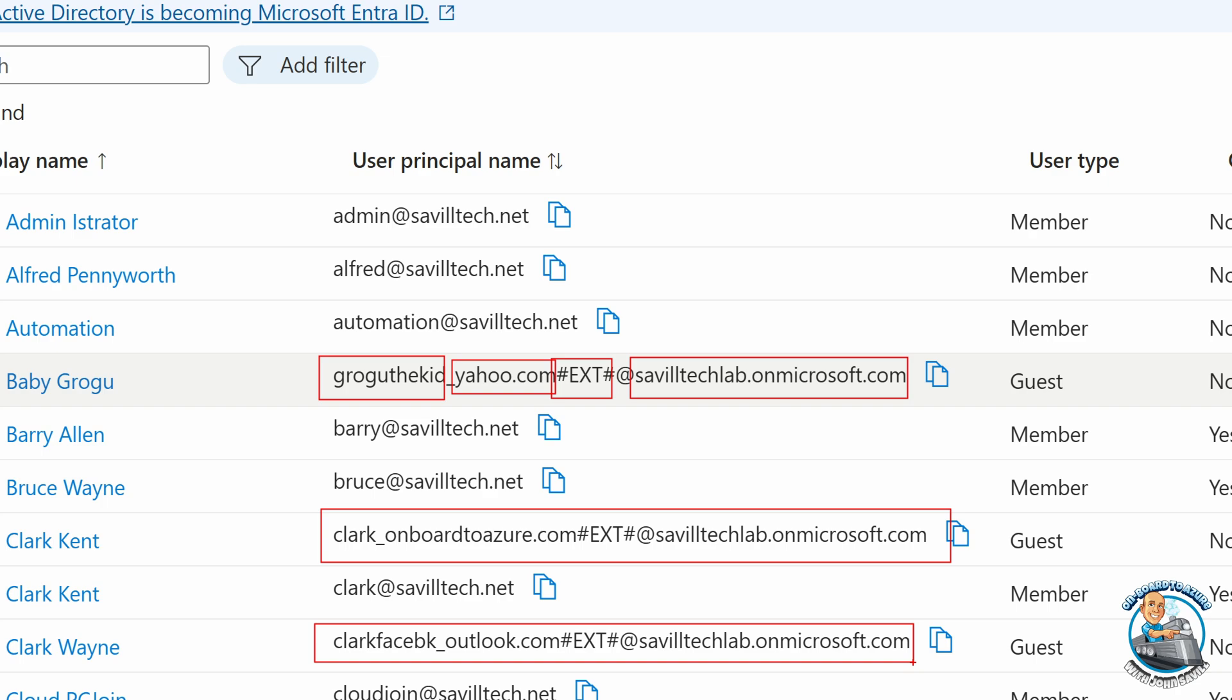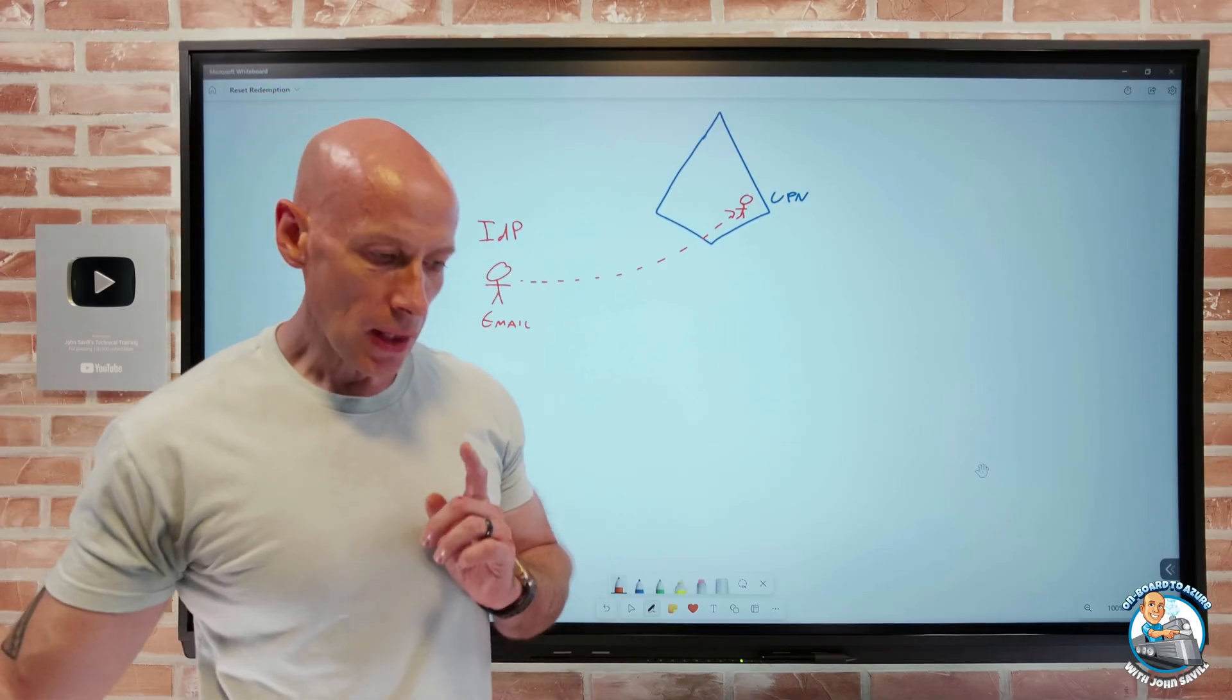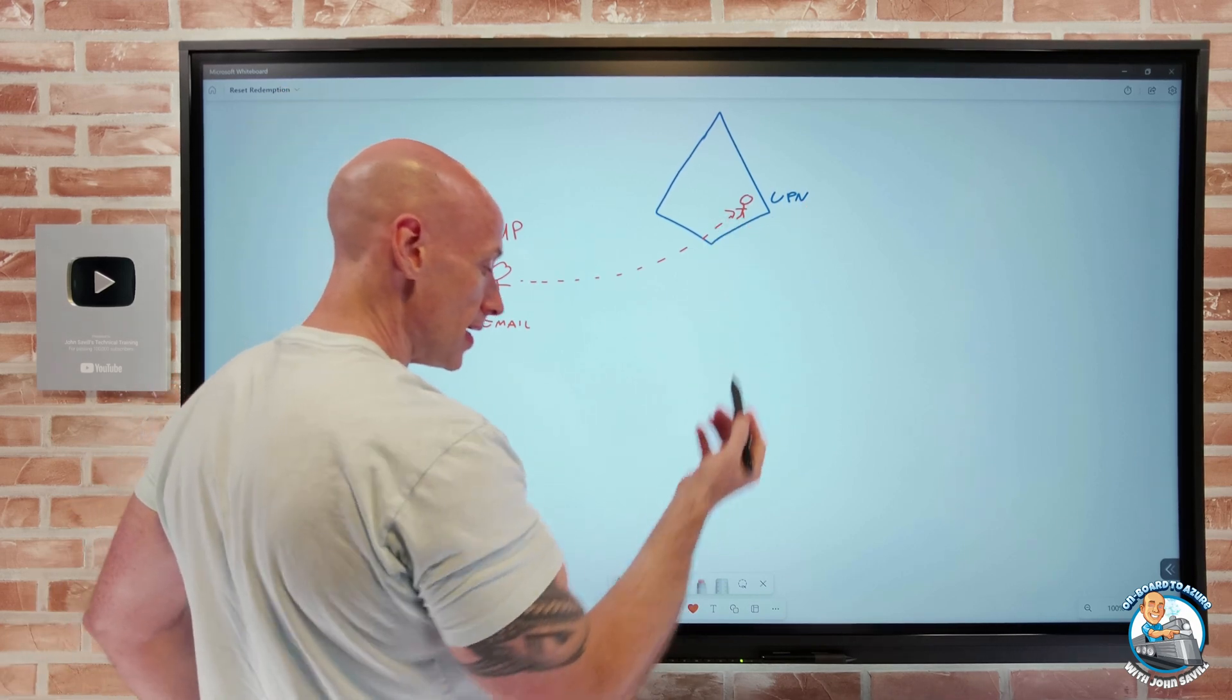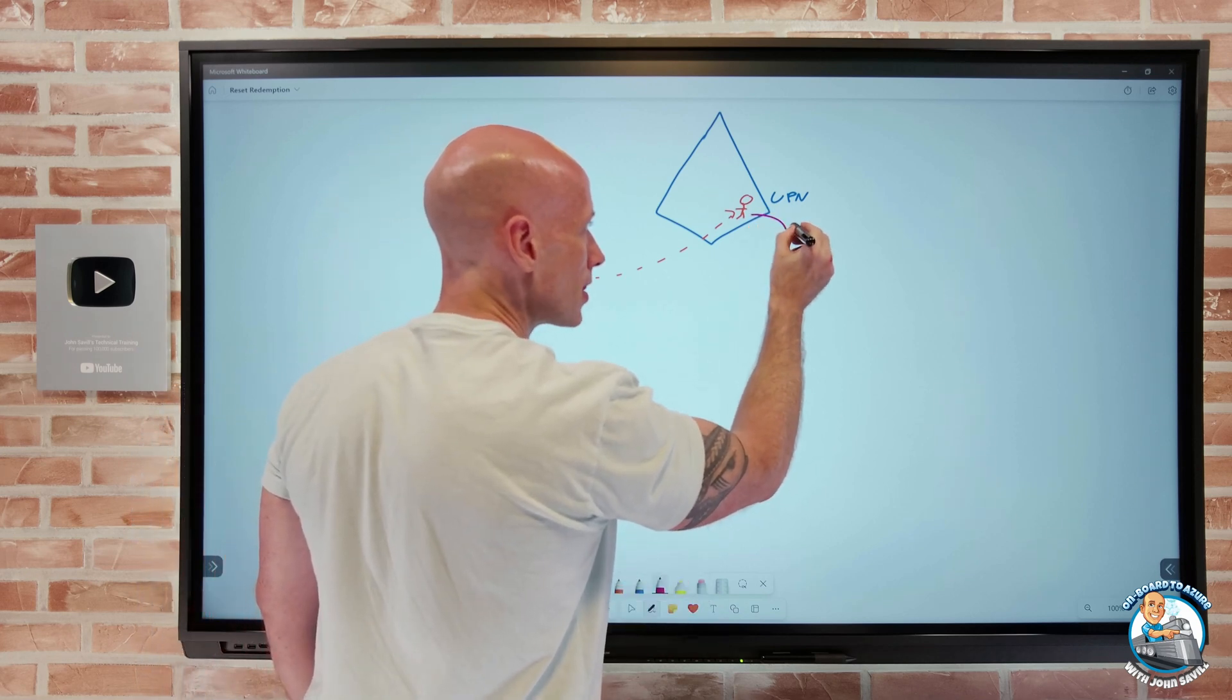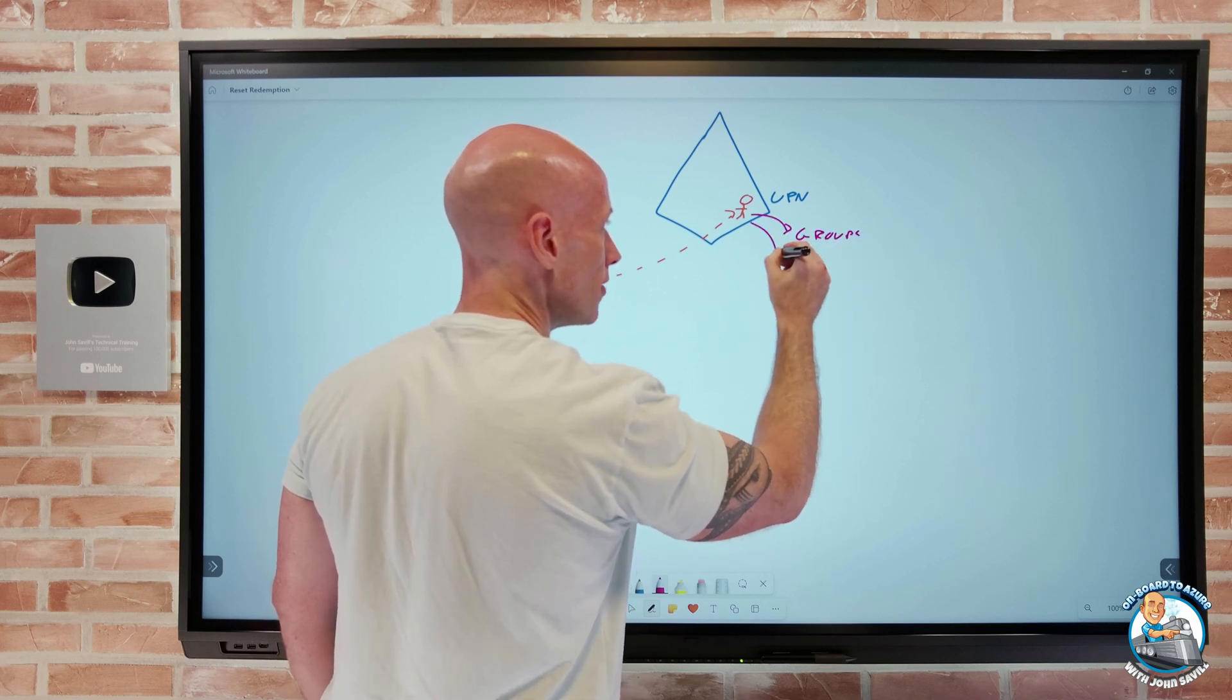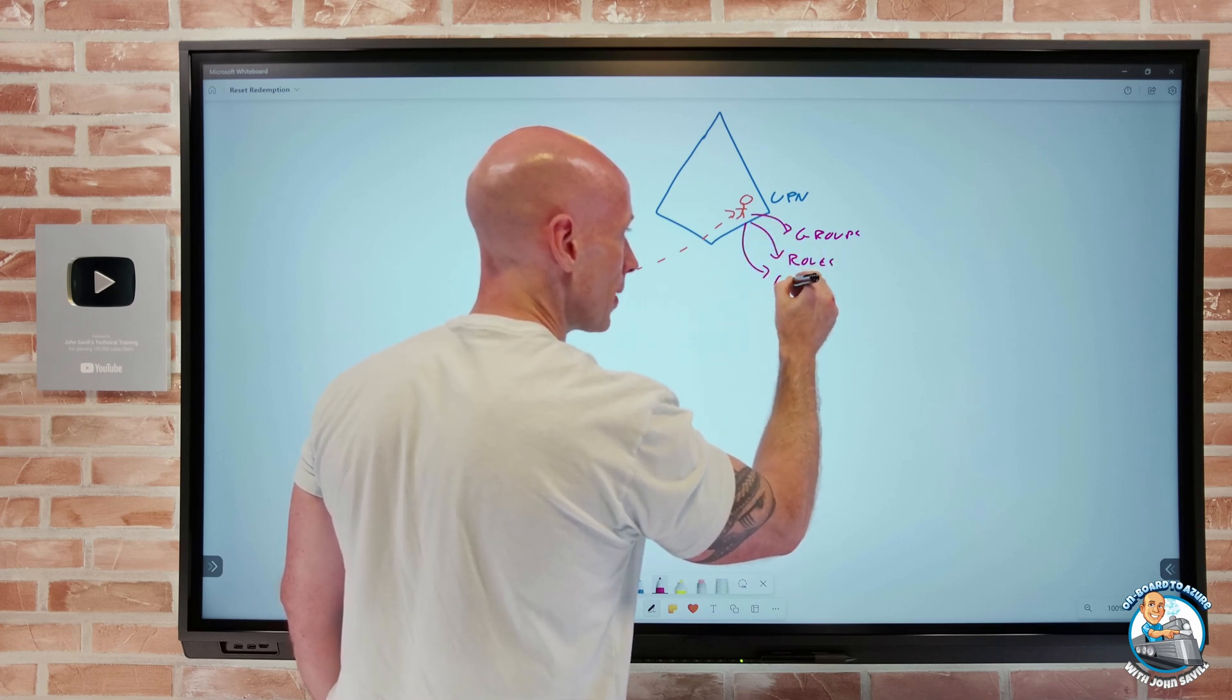So they are external identities and that's fantastic. And then once we have this, this is just an identity that we can give them access to things. For example, I can go and add them to groups. I can give them roles. I can assign them applications.